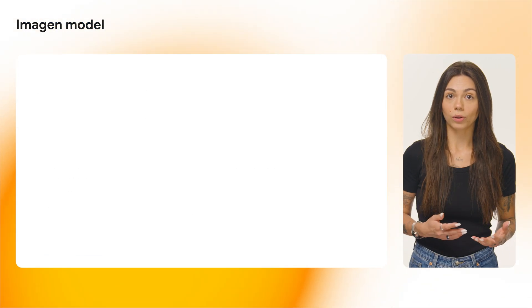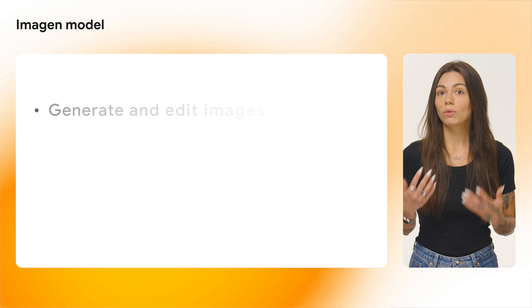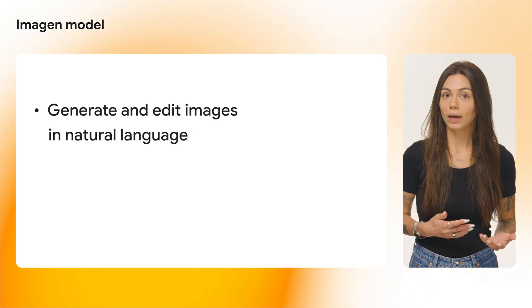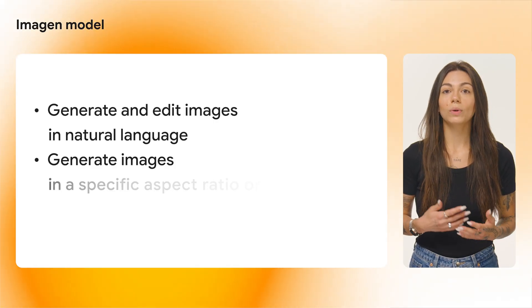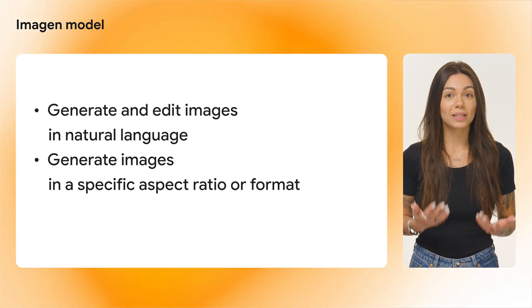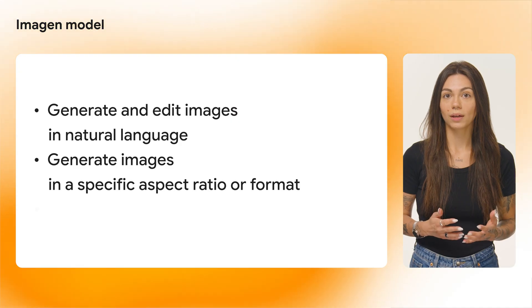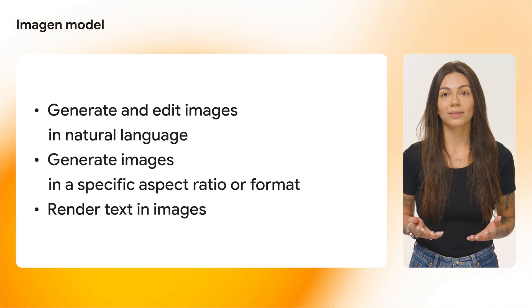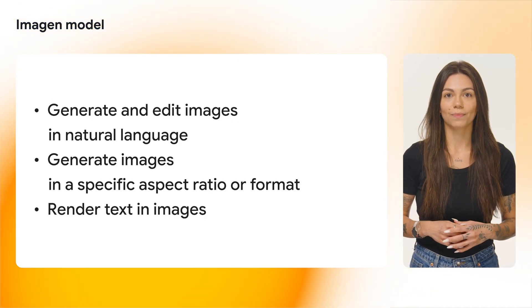When using an Imagine model, you can generate images from a text prompt only. With this capability, you can do things like generate images from prompts written in natural language, generate images in a specific aspect ratio or format, and render text in images. Now you may be wondering: which one of these models should I pick?